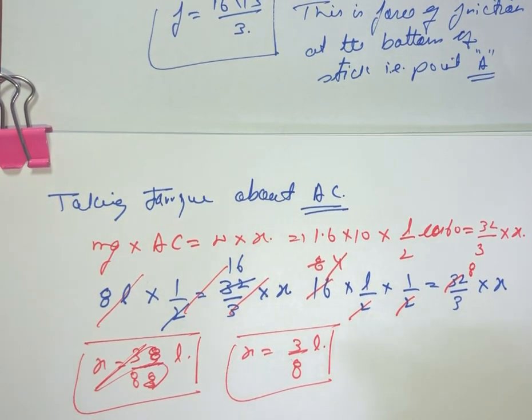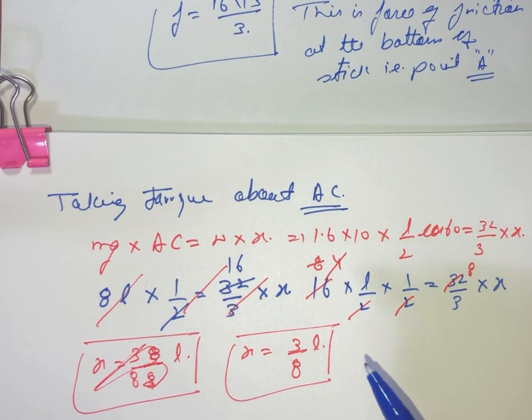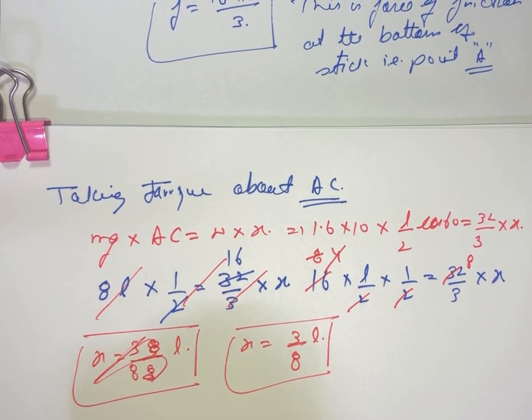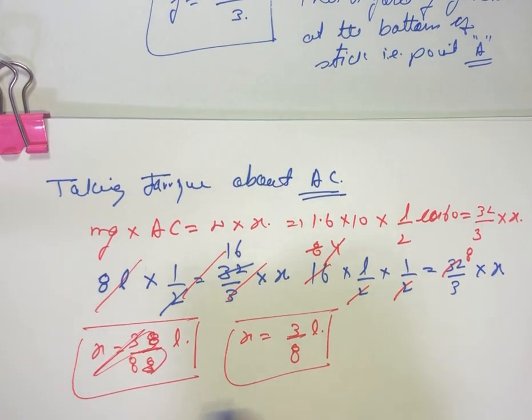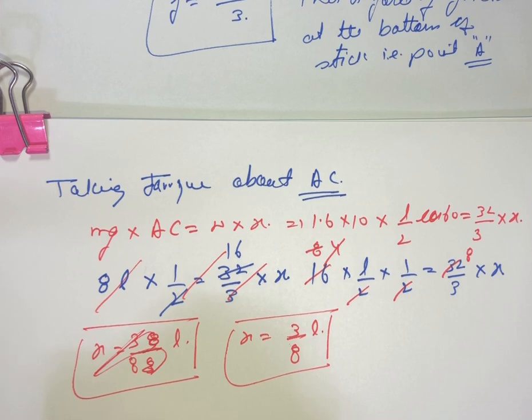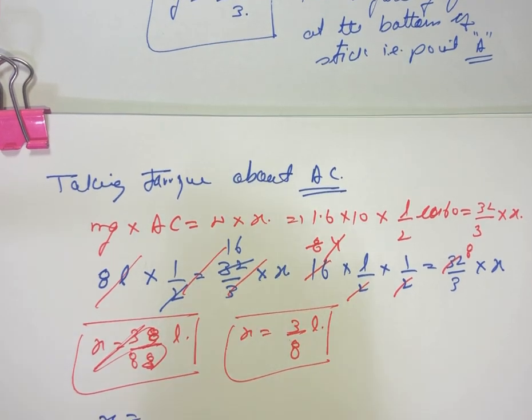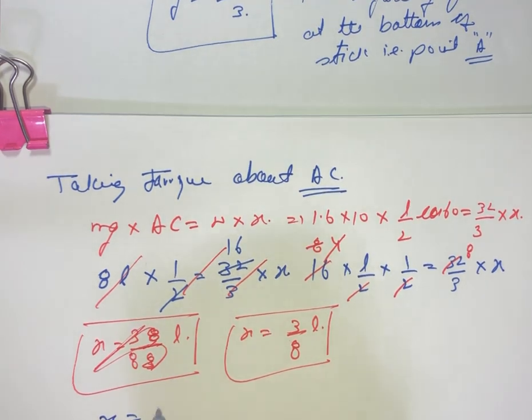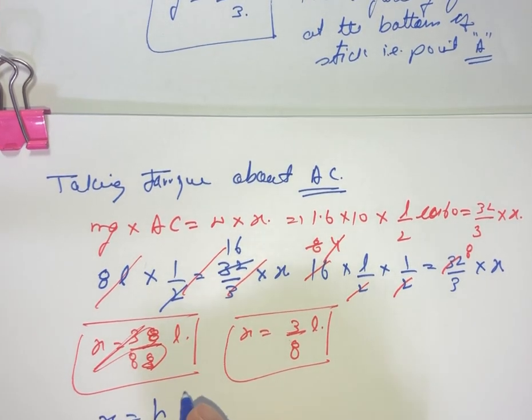Now we can use, let us find out what is the relationship between h and L, or rather we can say h and x. Okay so you can see h upon x will be equal to, we can say x is equal to h cos of 60.